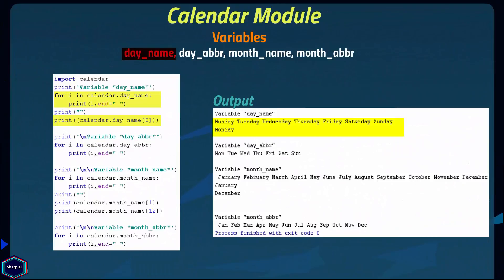The day_name variable is an array that represents the days of the week in the current locale. The weekday Monday has index value 0 and Sunday has index value 6. Similarly, the day_abbr variable prints an array that represents the abbreviated days of the week in the current locale.